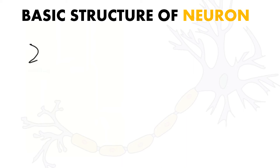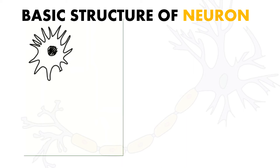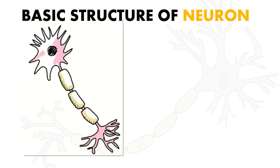Assalamualaikum and hi, we continue our lesson. Before this we learned about the two parts of the nervous system, which is the CNS and also the PNS. Both of those parts of the system are made up by neurons, so today we are going to learn about the neuron.